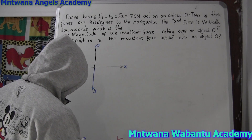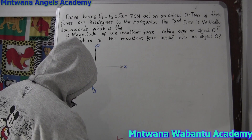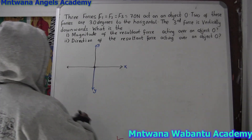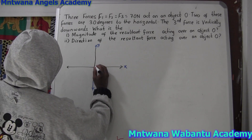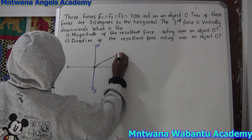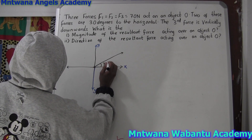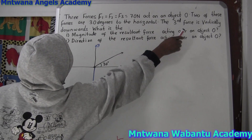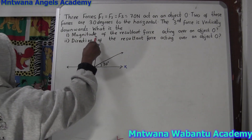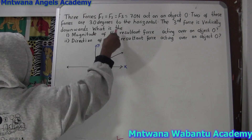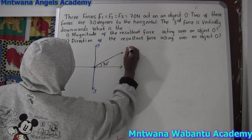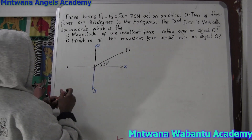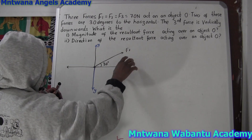What does that mean? Let's say the first force makes an angle of 30 degrees to the horizontal — let me call this Force 1. They also say the third force is vertical downward.